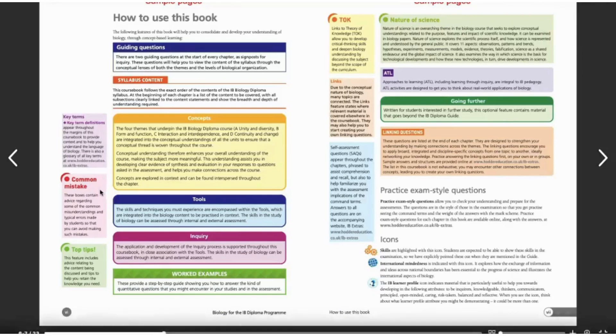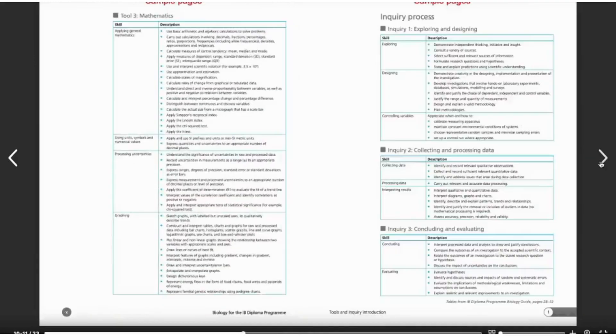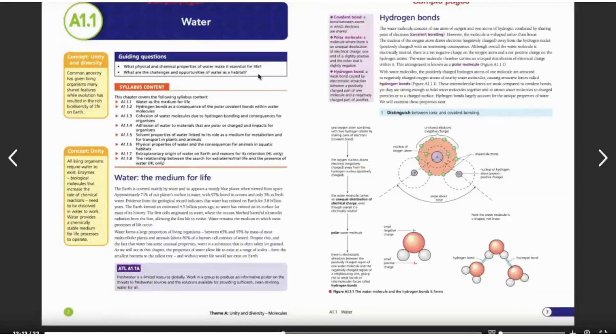Here we have the key terms with definitions of special parts that help understand the language of biology. The common mistakes boxes contain advice regarding some of the common misunderstandings. This is very important and a very good part of this book. The top tips features include advice relating to content being discussed to develop critical thinking skills and deepen biology understanding. There are also linking questions and practice exam-style questions.